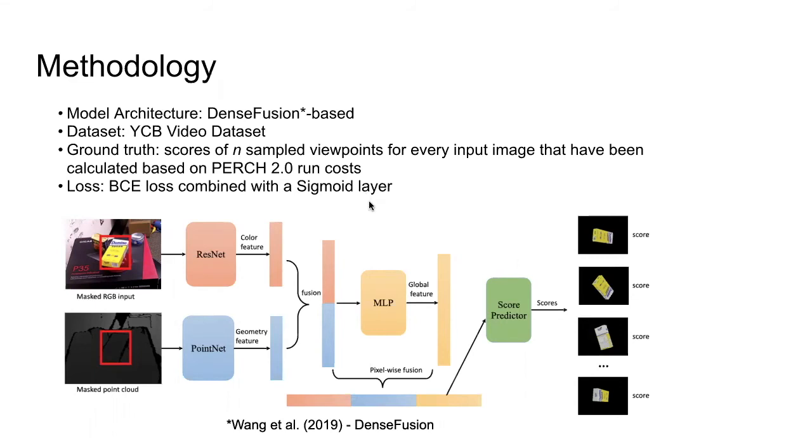The masked input image will be passed to a convolutional network that maps each pixel in the image block to color features. The masked 3D point cloud will be passed to a PointNet-based network that generates geometric features. Then, a pixel-wise fusion network combines both embeddings and outputs the estimation of the scores of each rotation viewpoint.